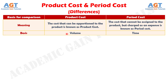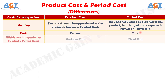Number 2: product cost is based on volume because they remain the same in unit price but differ in total value. On the other hand, time is taken as a basis for period cost because, as per the matching principle, the expenses should match the revenue, and therefore the costs are ascertained and charged in the accounting period in which they are incurred.